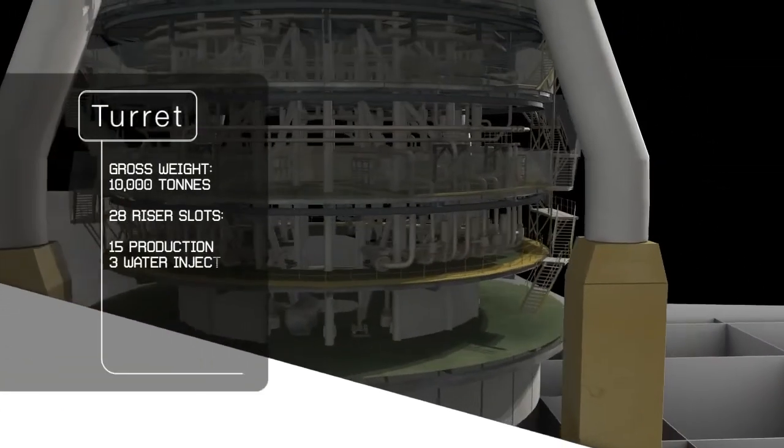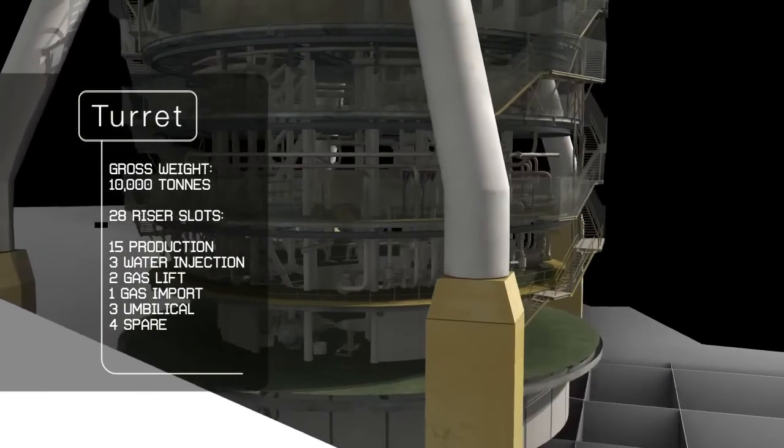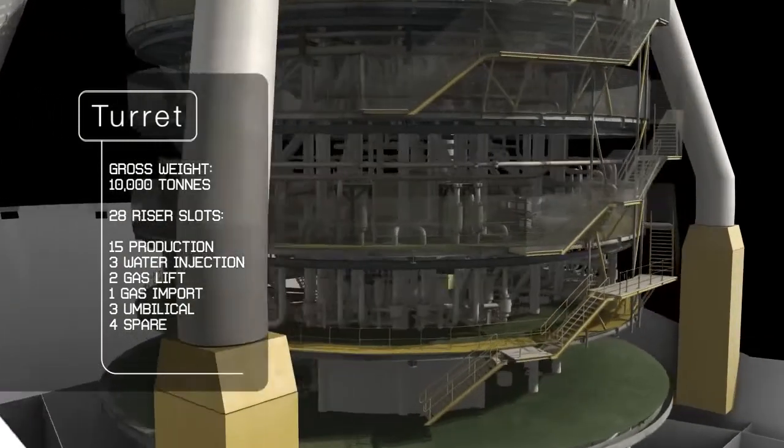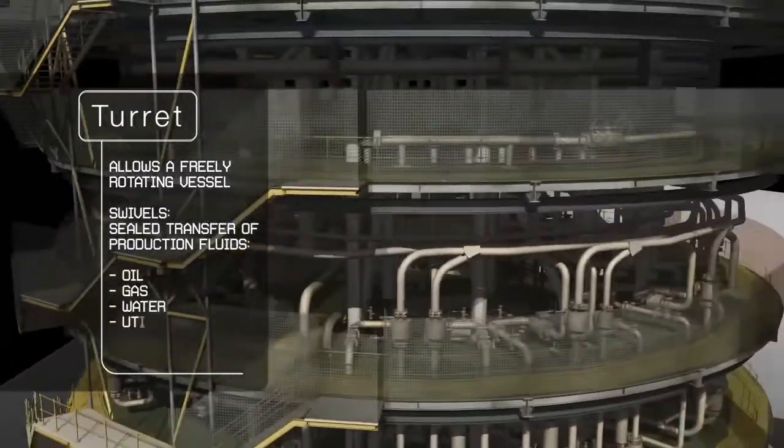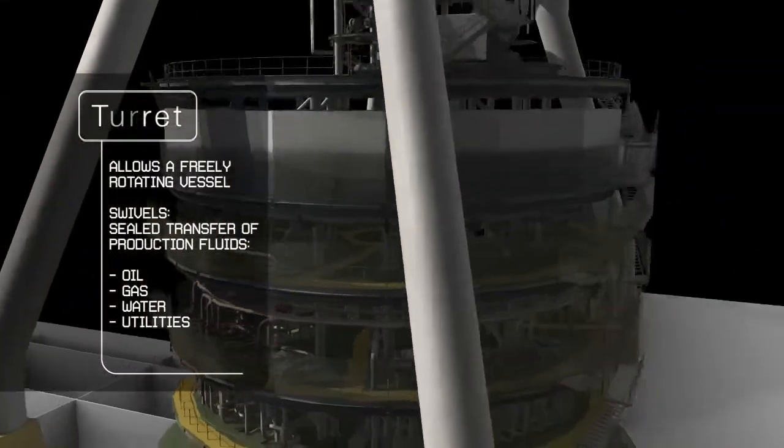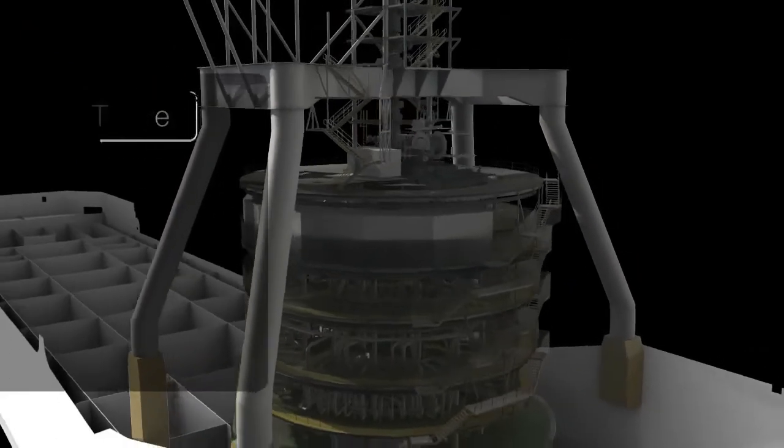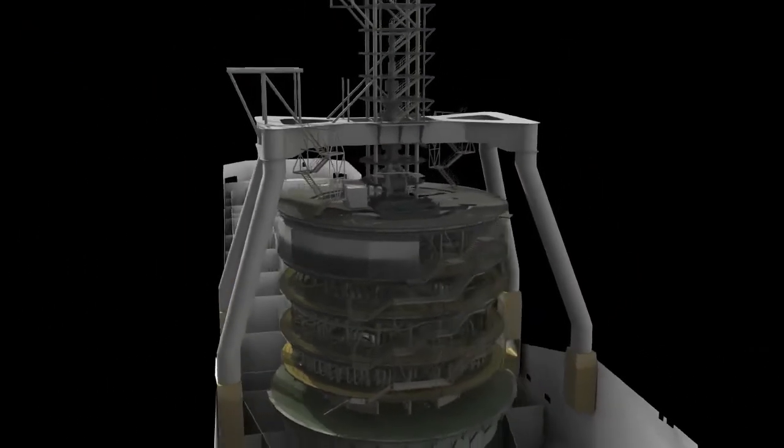The bow of the vessel will house the turret, one of the most complex elements of the FPSO. It will weigh over 10,000 tons and will allow the boat to rotate around the fixed risers. It will be designed and fabricated by Single Buoy Mooring of Monaco.